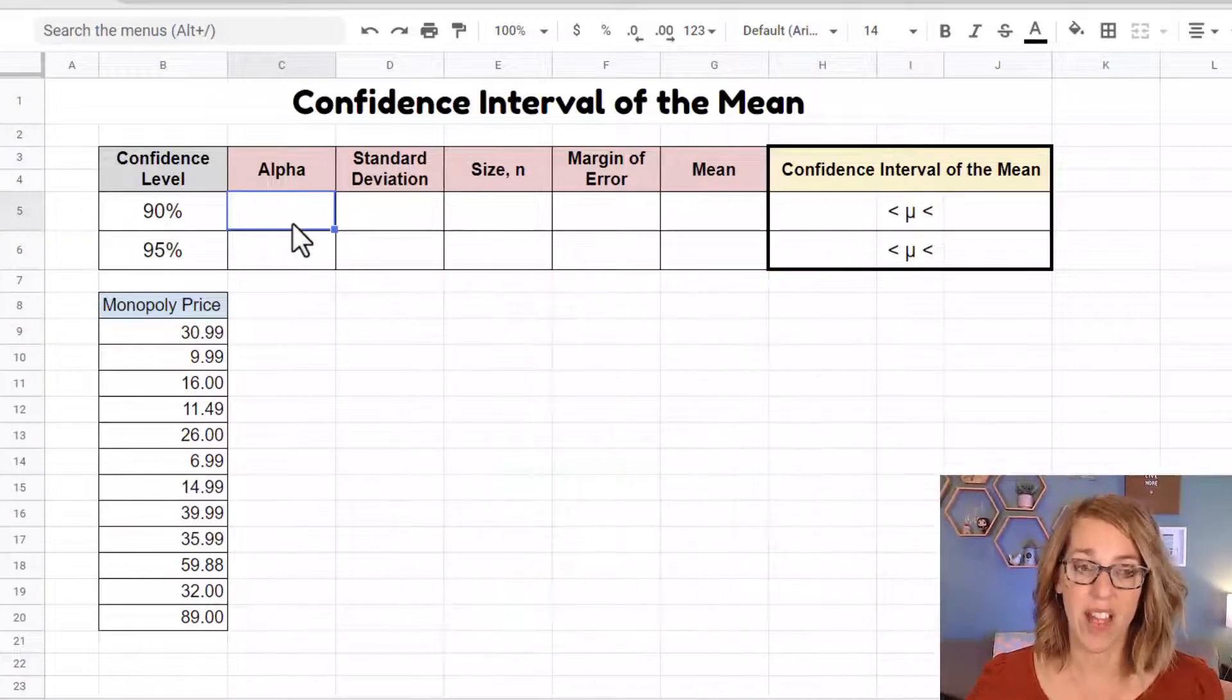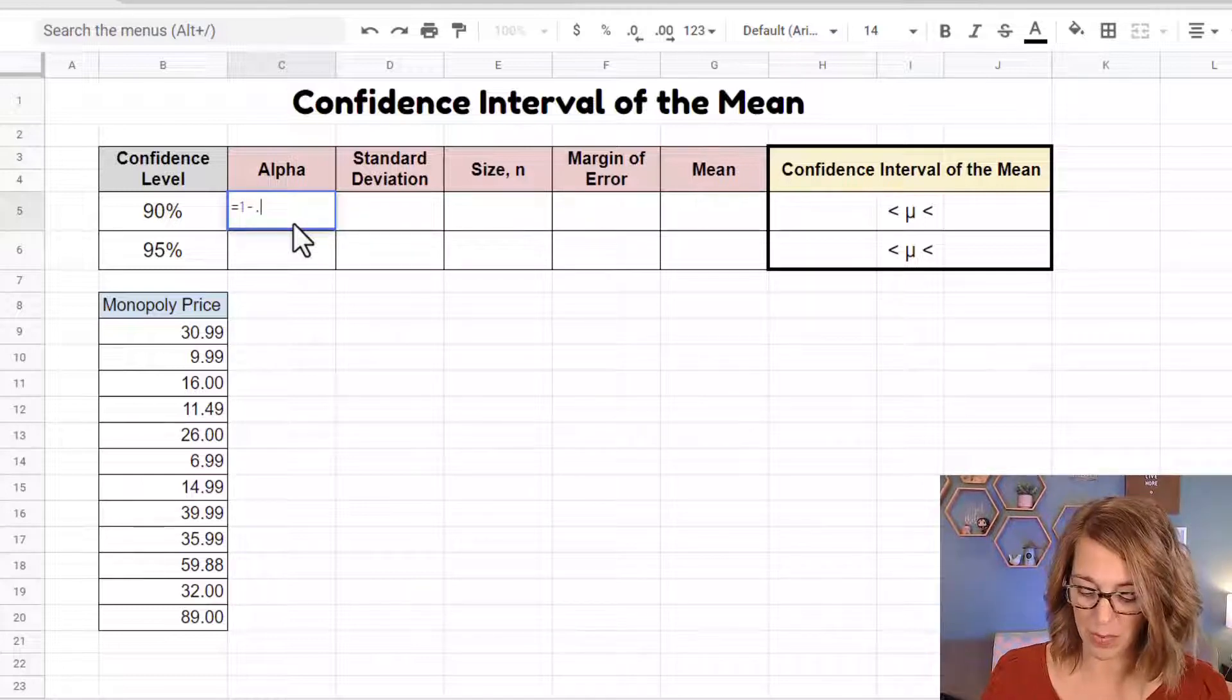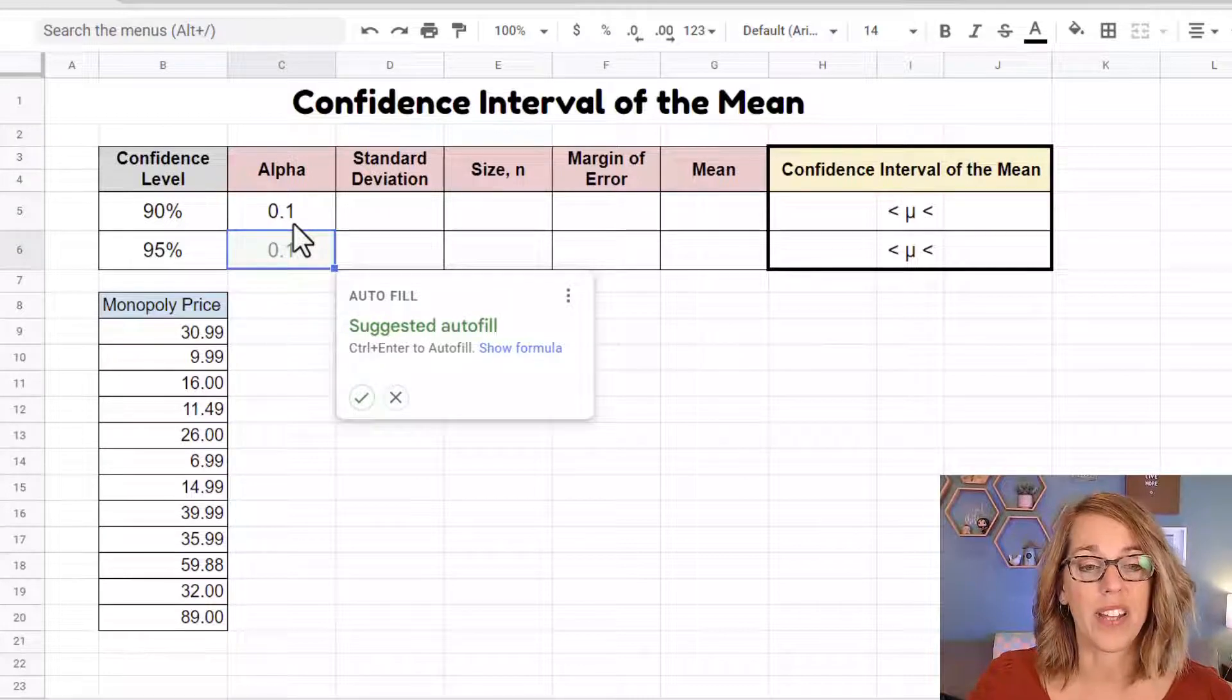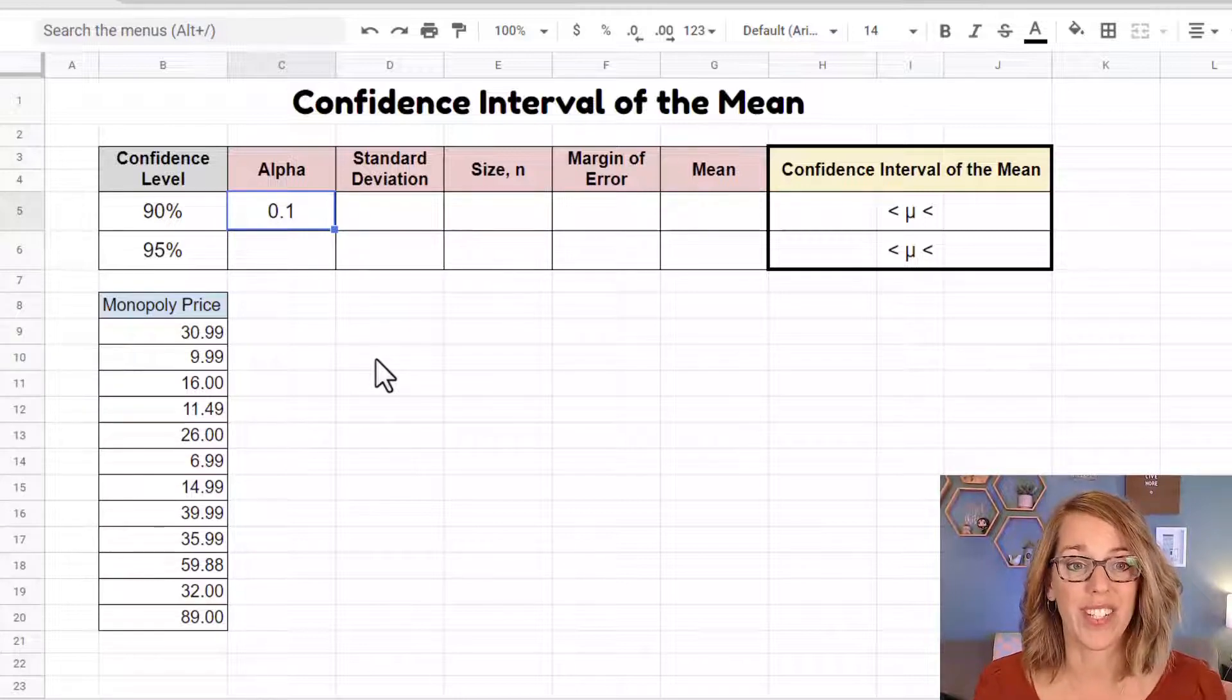I'm going to start with the alpha. I'm going to hit the equal sign and then do one minus the confidence level as a decimal. So one minus 0.90 and we end up with 0.1 and I don't want to autofill. I'll go ahead and X that out. So the alpha, the area left over in those tails is 0.1.